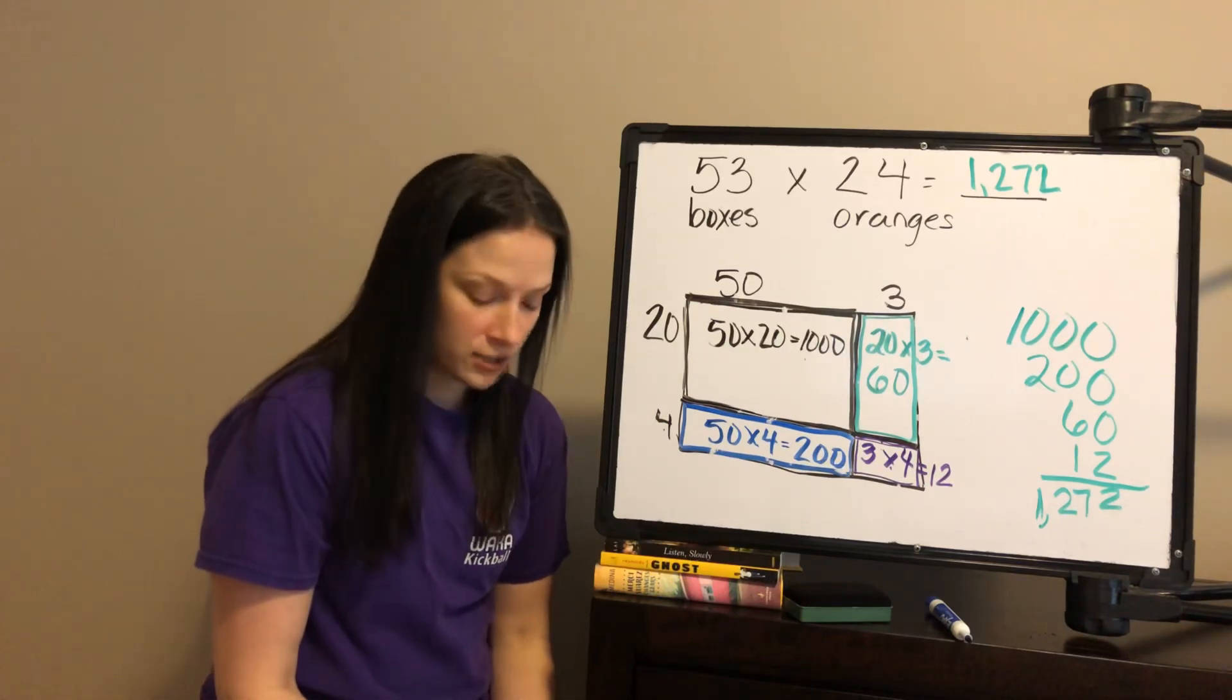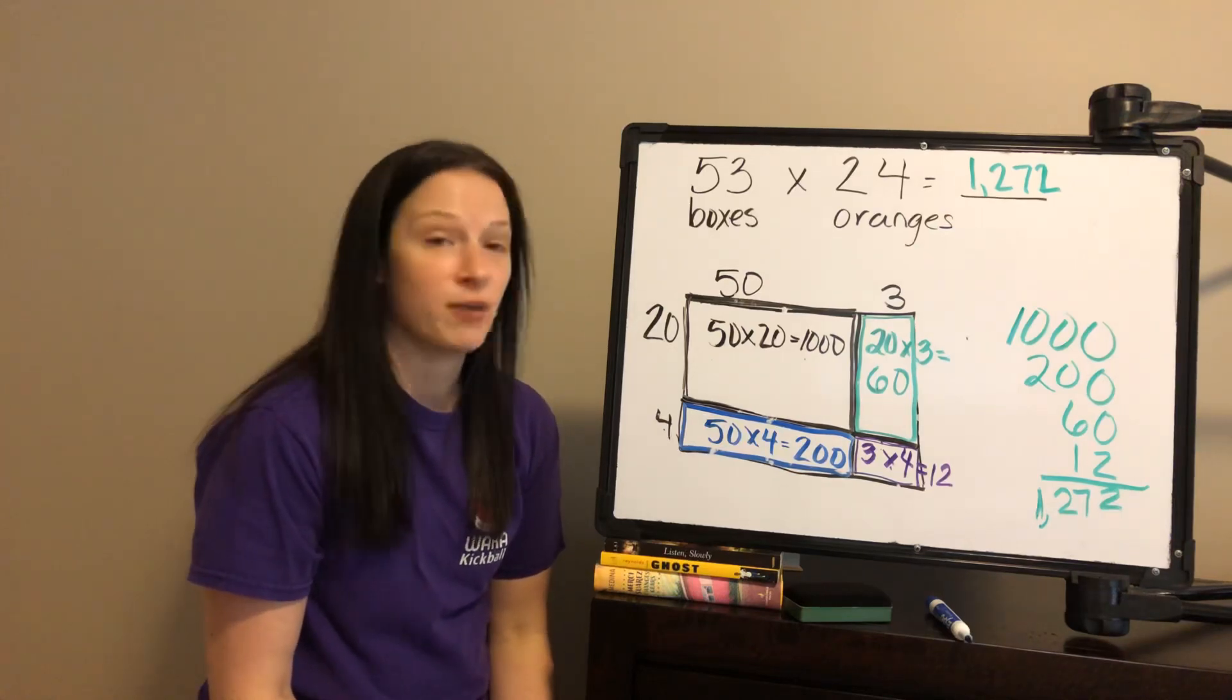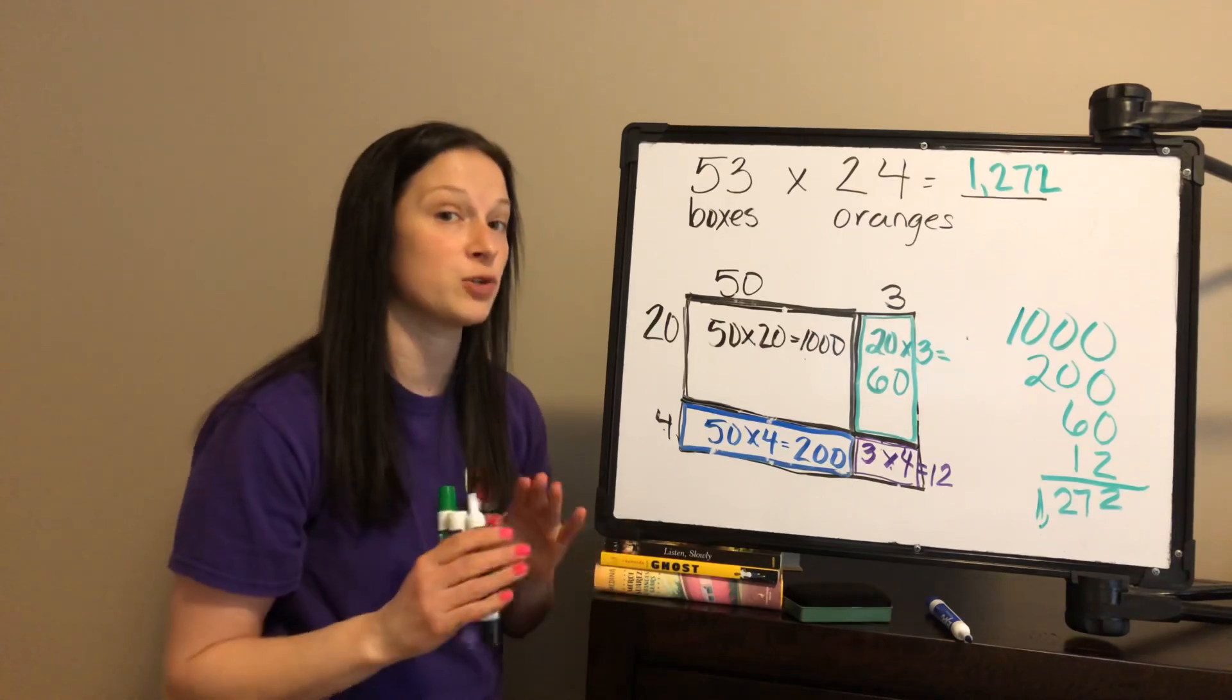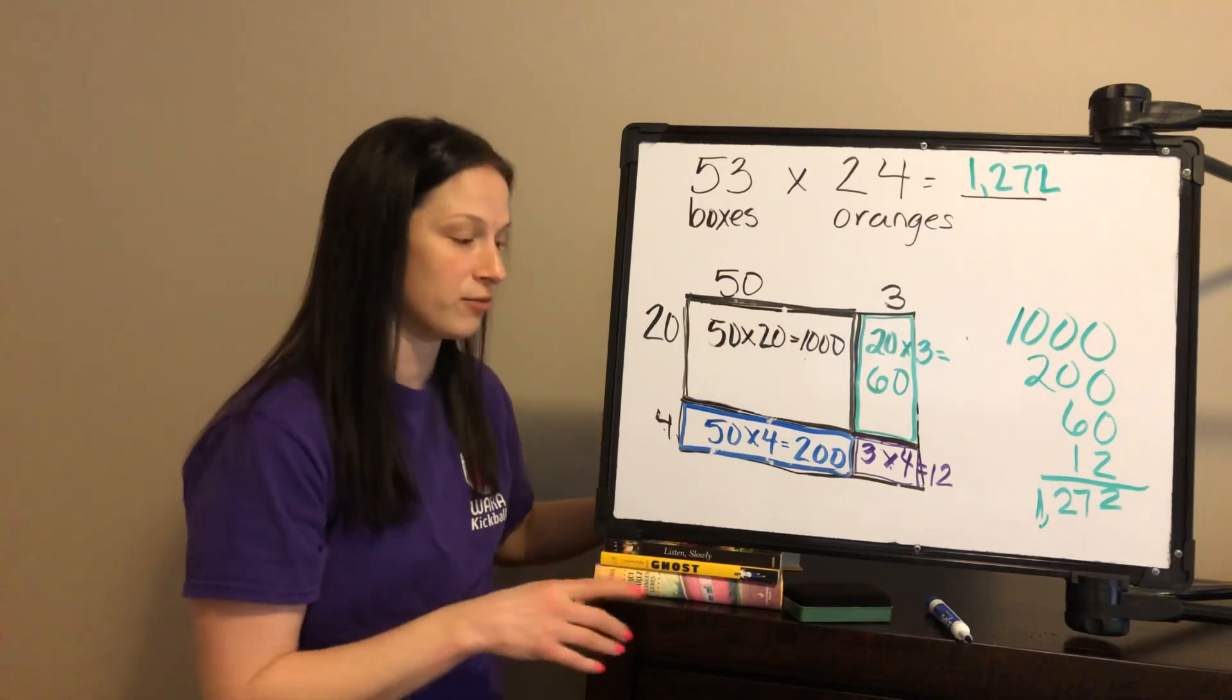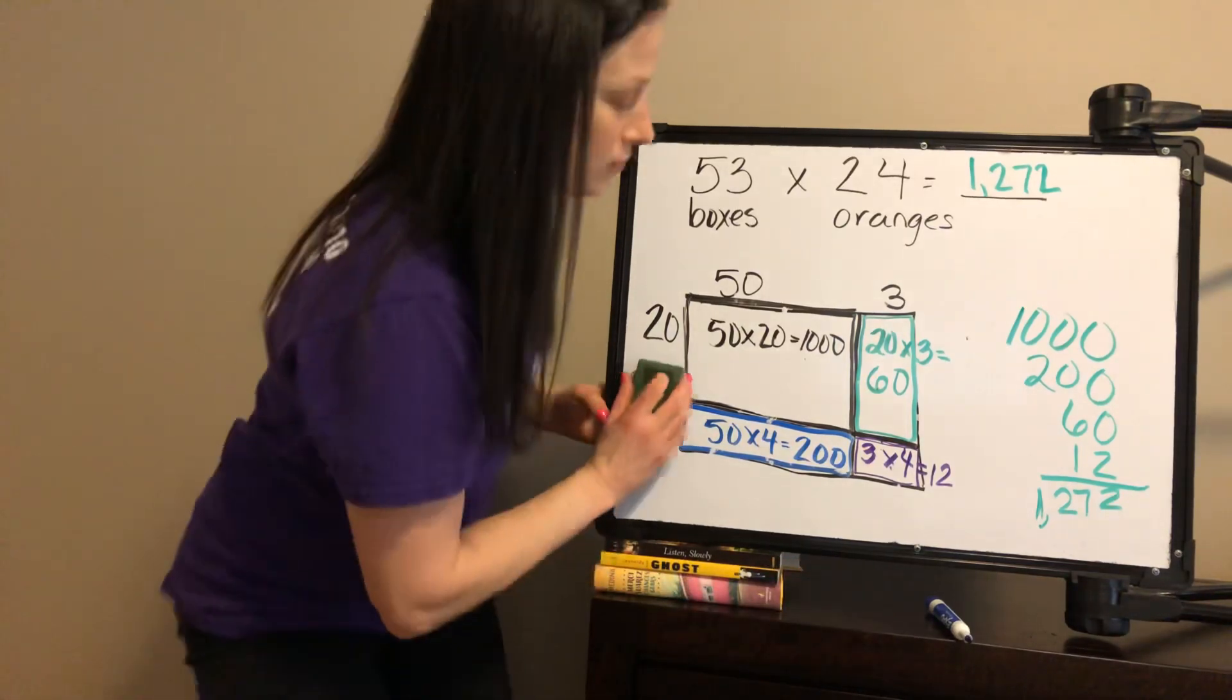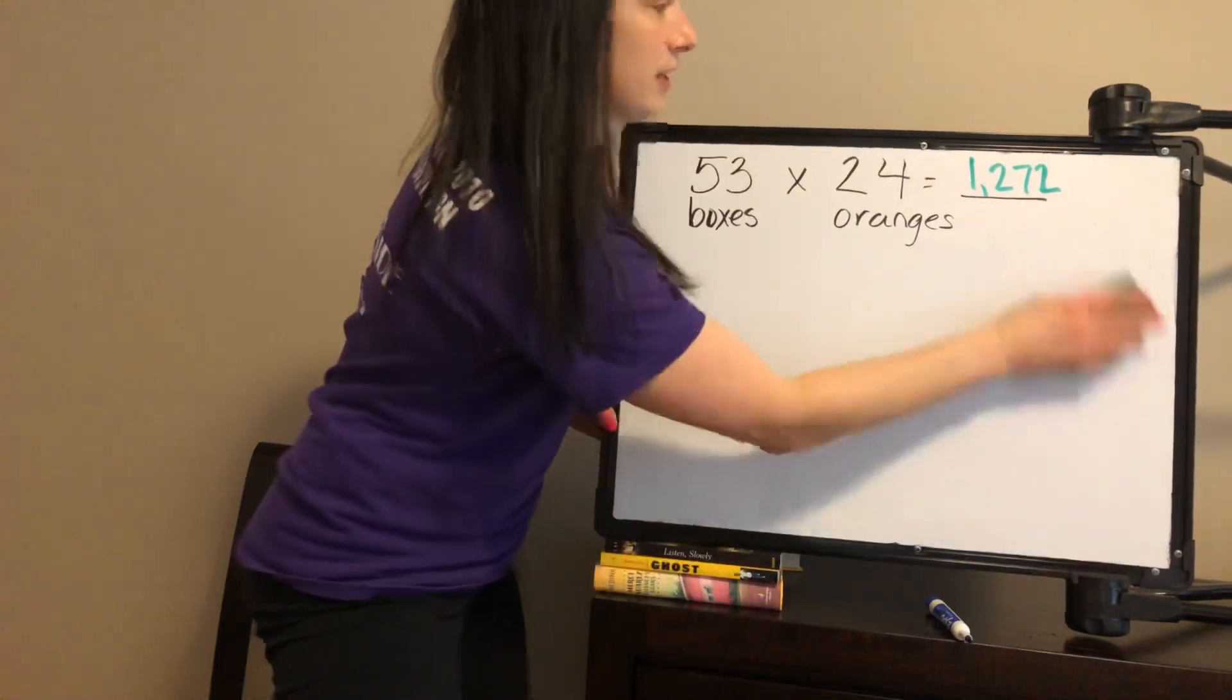This is called breaking both numbers apart. And I want to show you one more example using the area model. And I want to show you something that kids might make a mistake with sometimes that we want to make sure we keep an eye out for as well. So students, if you're doing this, you need to recognize as well.